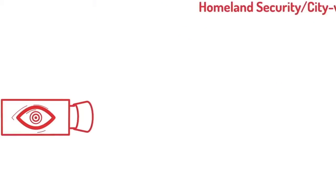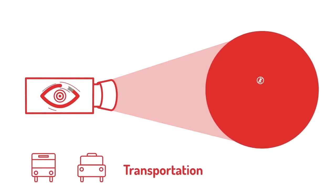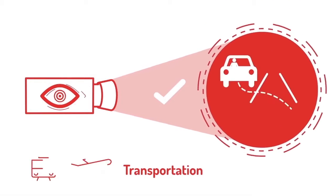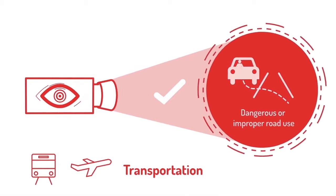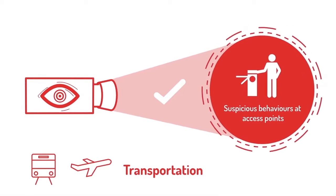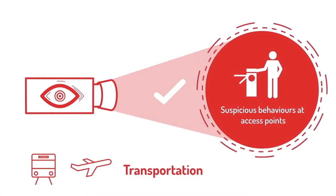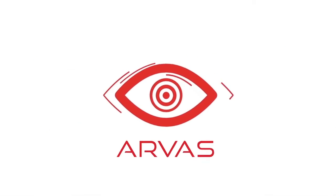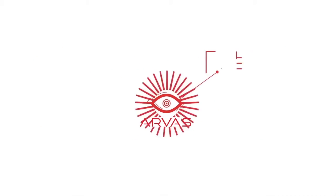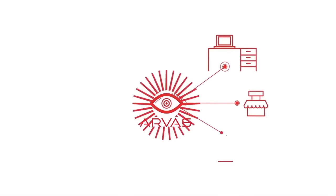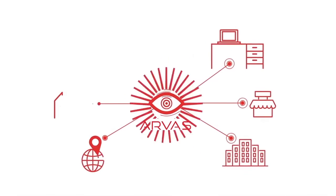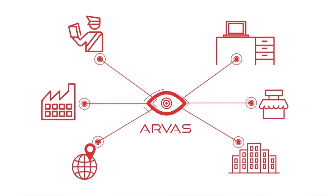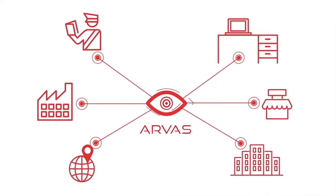ARVOS can also be used in transportation hubs, providing automated monitoring effectively so that manpower and resources can be more effectively used for daily operations, especially during peak hour traffic or emergencies. ARVOS is useful in various other aspects, extending analytics coverage not only to security and surveillance, but also to improve an organization's safety, operations, and maintenance.